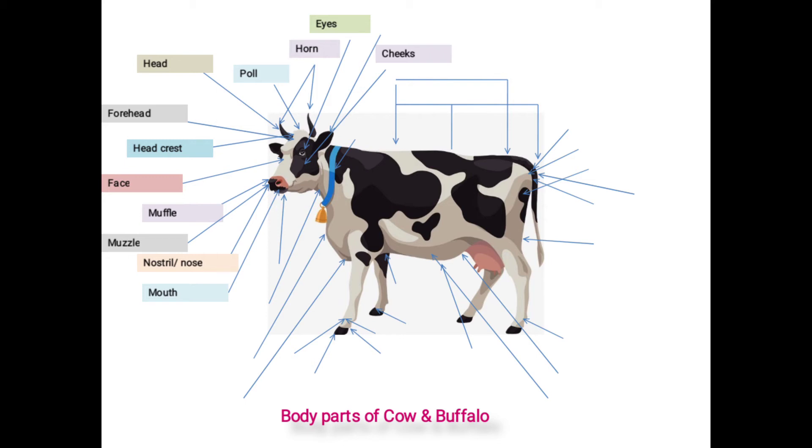Then cheeks. Side portion of face is called as cheeks. Whereas this raised portion of lower jaw called as chin. Next one is ears. Ears are located on the side of the horns.